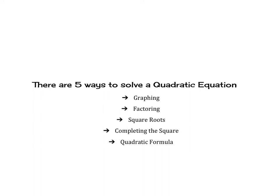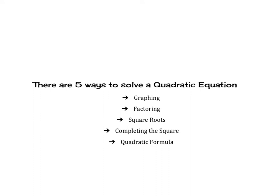There are five ways to solve a quadratic equation: graphing, factoring — where you use the x-method, finding what multiplies to a times c and adds to b, then write it factored, set equal to zero, and solve — square roots, completing the square where you take b, divide it in half, and square it to find the perfect number, and the quadratic formula: x equals negative b plus or minus the square root of b squared minus 4ac, all over 2a.